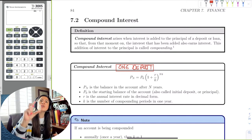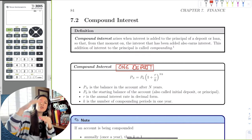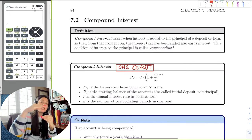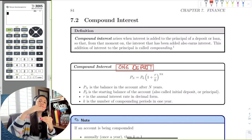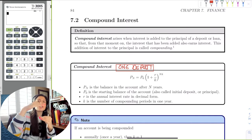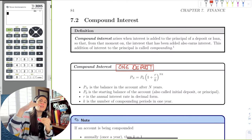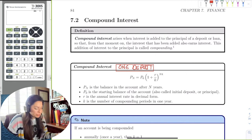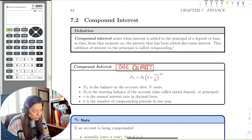The longer you let your money sit, the more interest you earn. The first year you earn interest off the original amount; the second year you earn interest off a bigger amount because interest was added; the third year it's even more. So it's interest off interest, but only one deposit. This leads us to the formula.